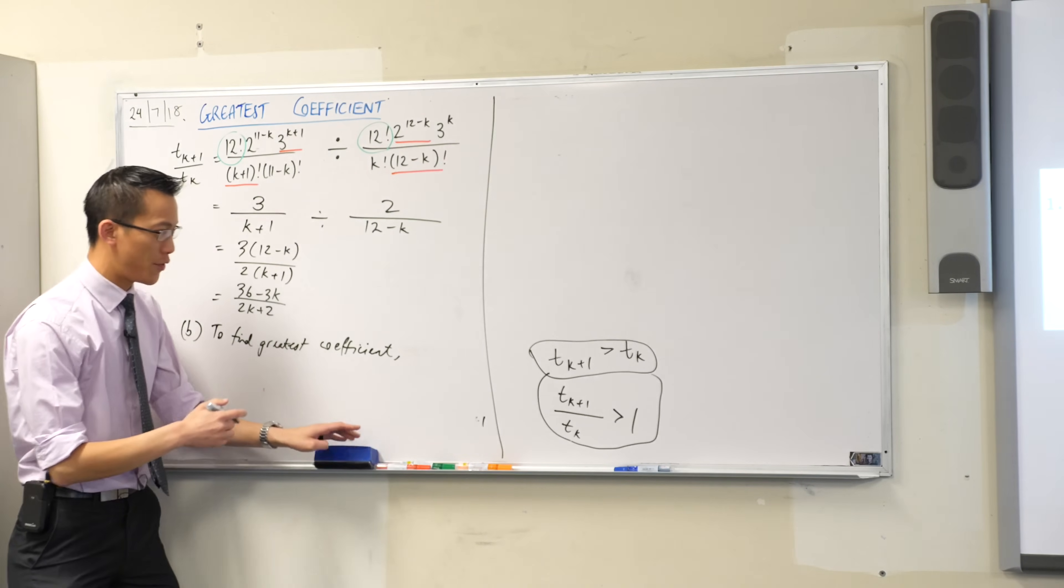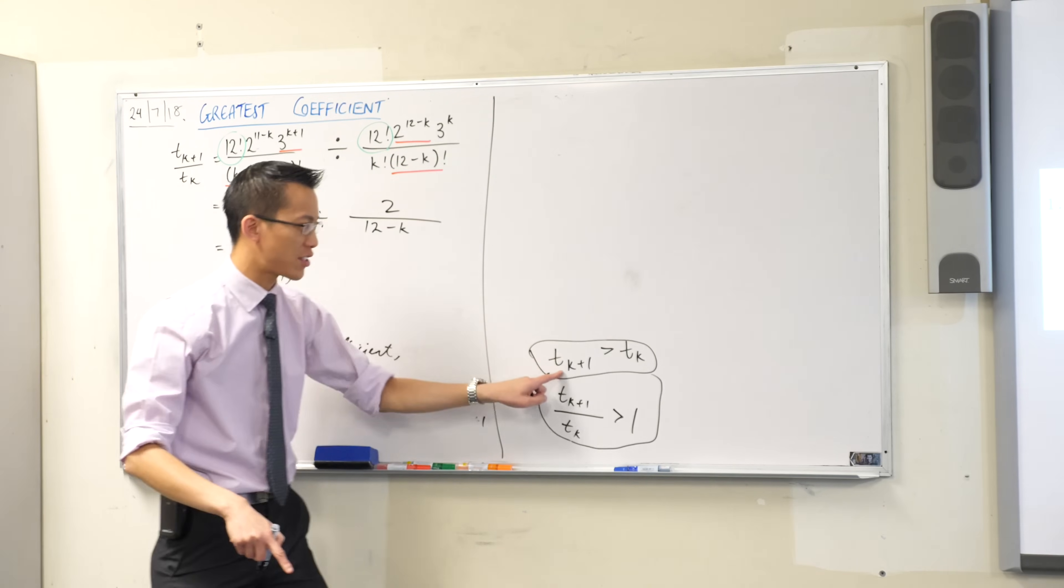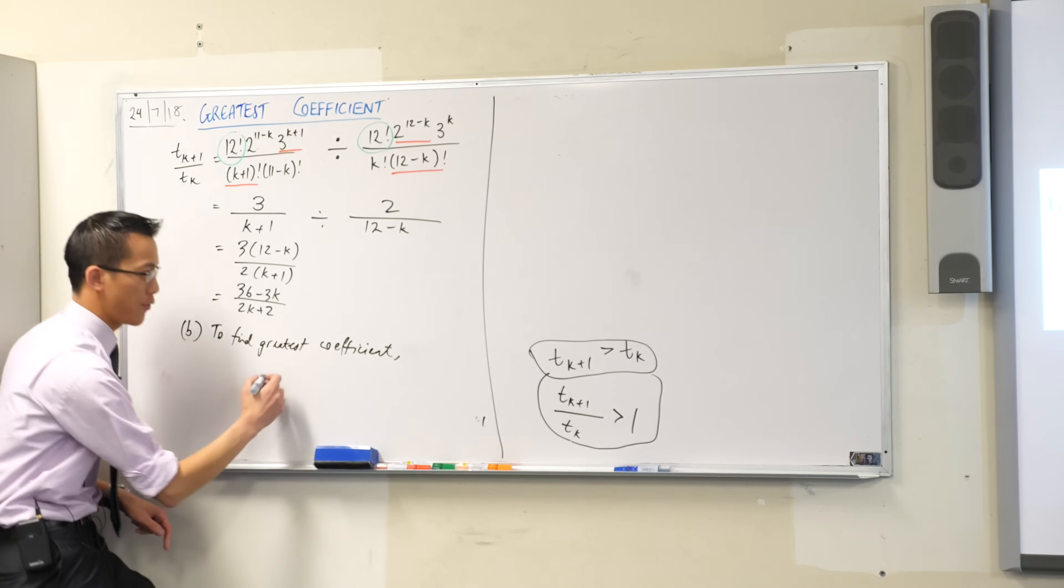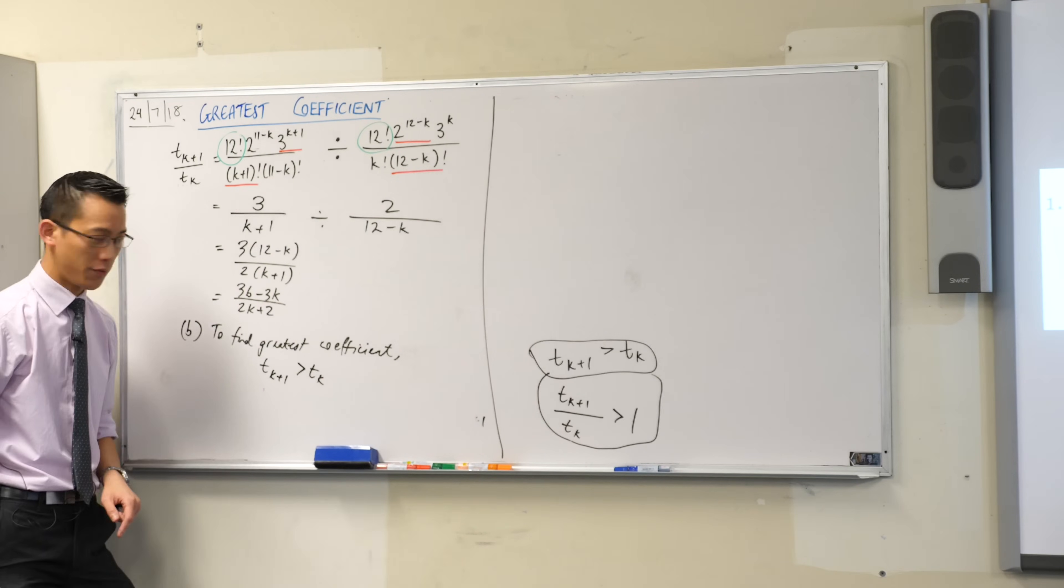To find the greatest coefficient, what I want to know is when do the terms keep getting bigger and bigger? When is the next term bigger than the one that preceded it? So to find the greatest coefficient, I need to solve this. That's what I'm looking for.